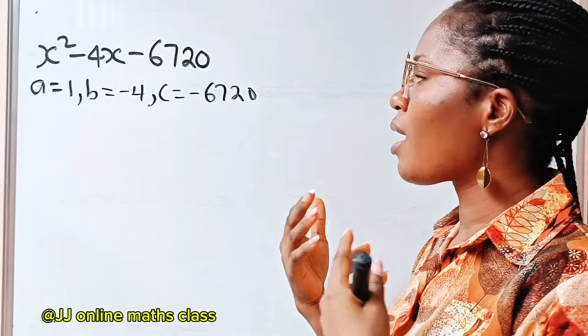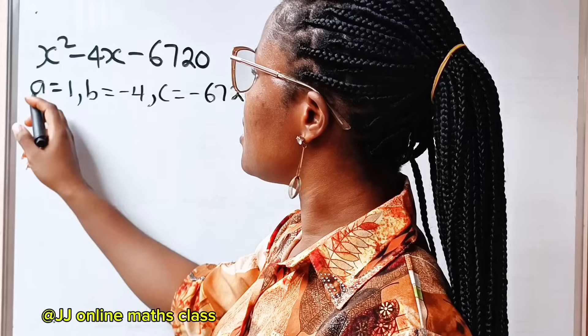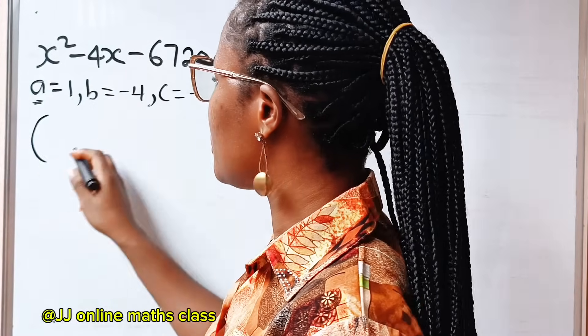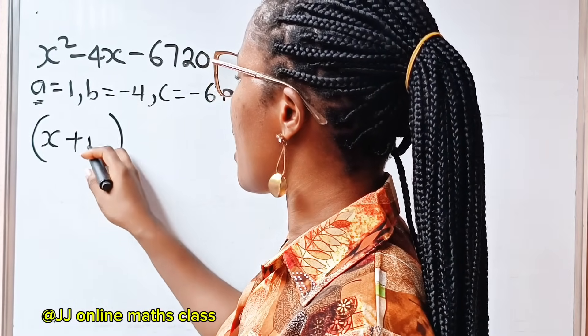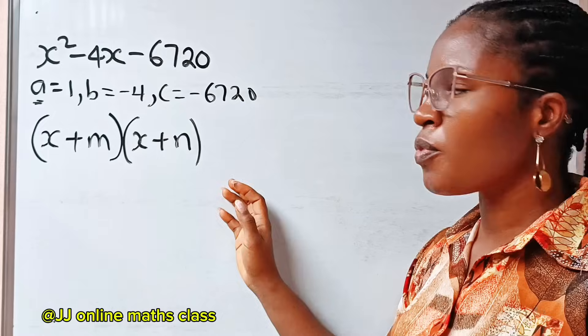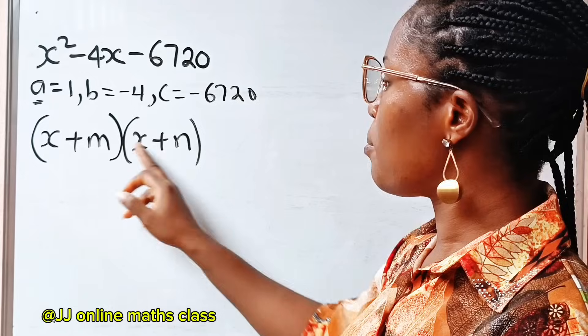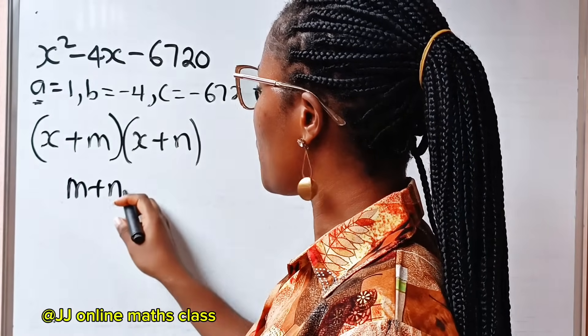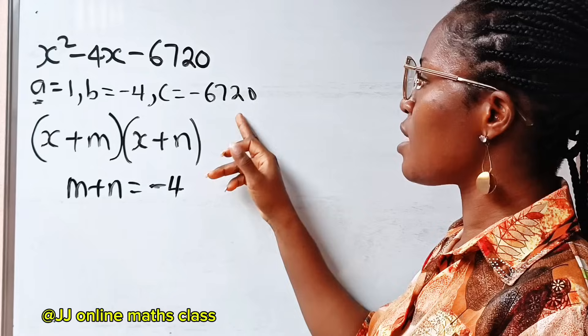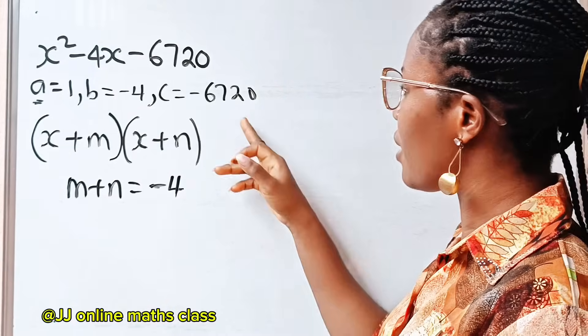Now, in this method, we are going to concentrate on the sum and not on the product. Since the coefficient of x squared is 1, then the answer to this will be in this form: x plus m multiplied by x plus n. It means that m plus n will give me minus 4, and m times n will give me minus 6720. But like I said, in this method, we are going to concentrate on our sum and not on our product.